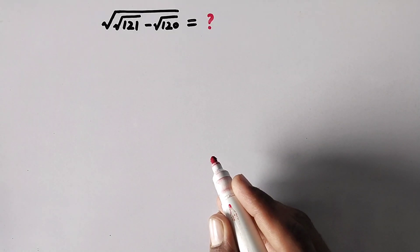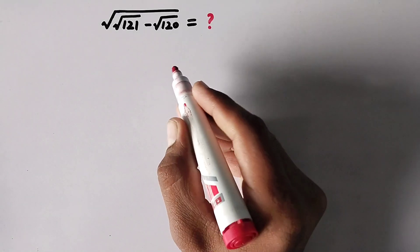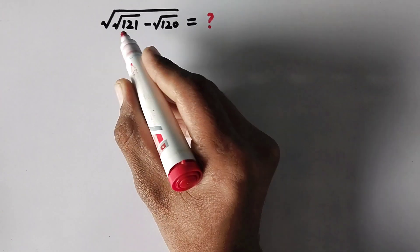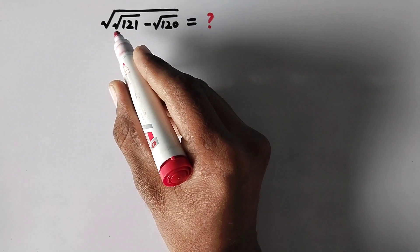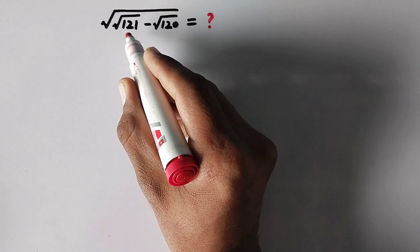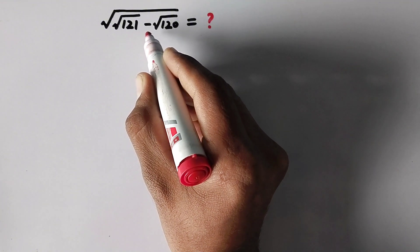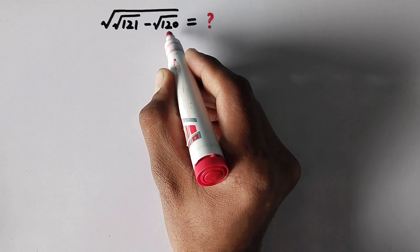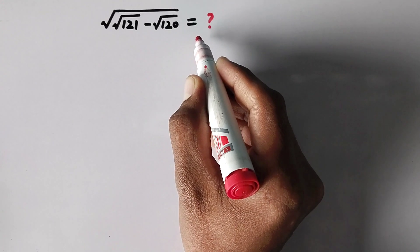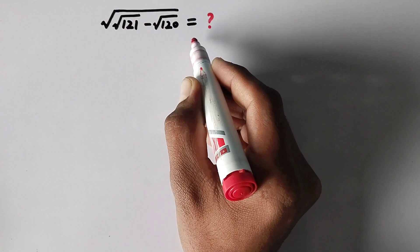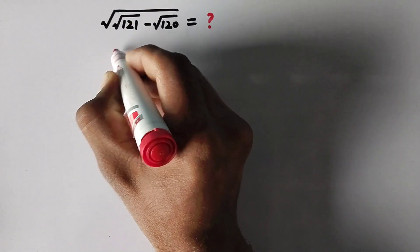Hello everyone and welcome to Explored Maths. Today we have to solve the problem: square root of square root of 121 minus square root of 120 is equal to what? So let us see the solution.